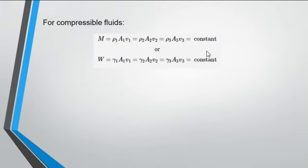For compressible fluids, instead of the discharge, we use the mass flow rate and the weight flow rate. For mass flow rate, it equals the product of the density and the discharge at a given section, which equals the density times the discharge at another section. For the weight flow rate, just replace the density by the specific weight.